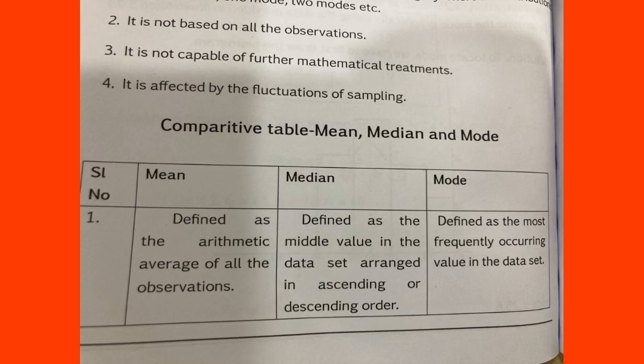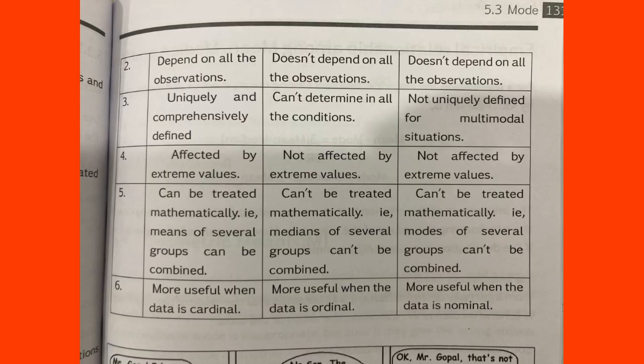The mean is the average of all the observations. The median is the middle value in the dataset arranged in ascending order. The mode is the most frequently occurring value. The mean is dependent on all the observations. The median also depends on all the observations. The mode does not depend on all the observations — that's the key difference between the three.